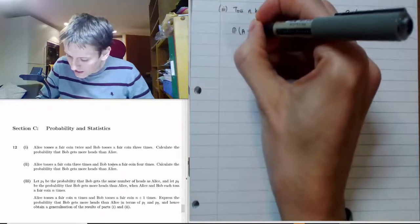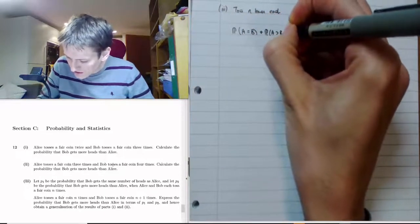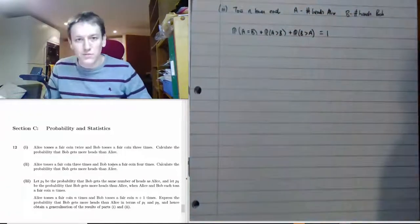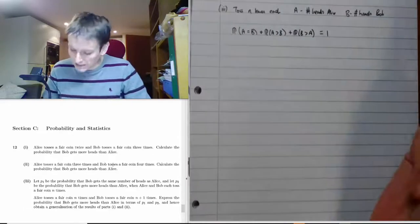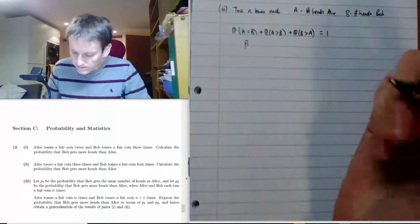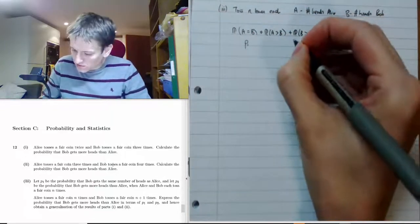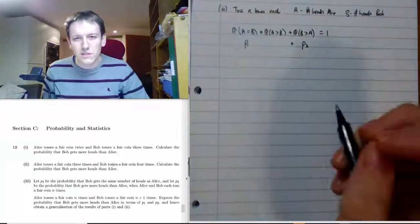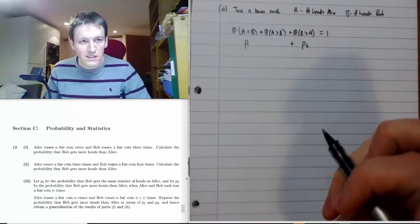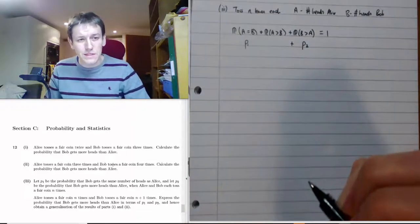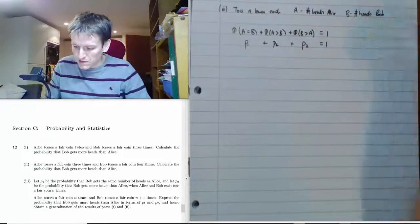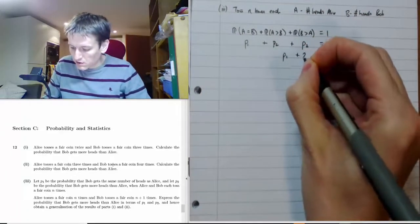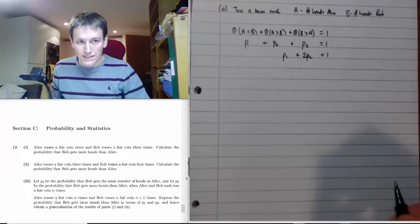When they both toss n coins, let A and B be their respective head counts. We must have P(A = B) + P(A > B) + P(B > A) = 1, covering all possibilities. The first is p1 and the third is p2. By symmetry — fair coins, same number of tosses — P(A > B) also equals p2. So we get the equation p1 + 2p2 = 1.